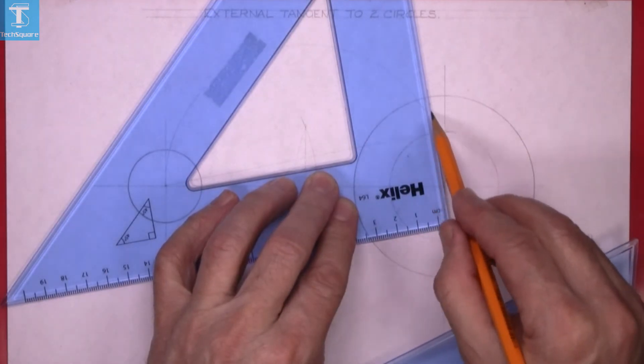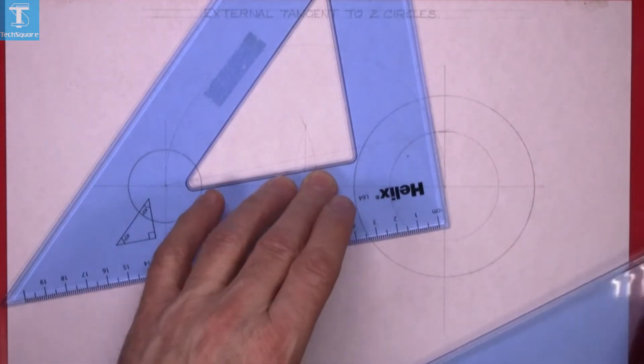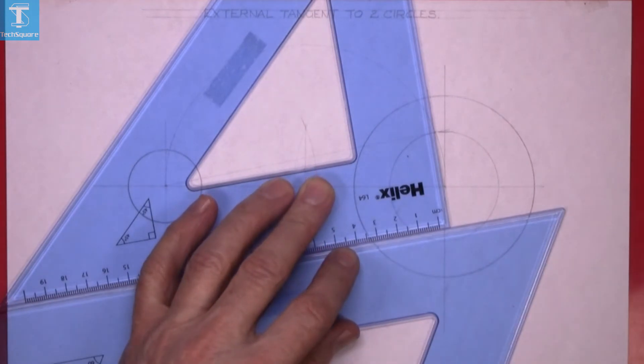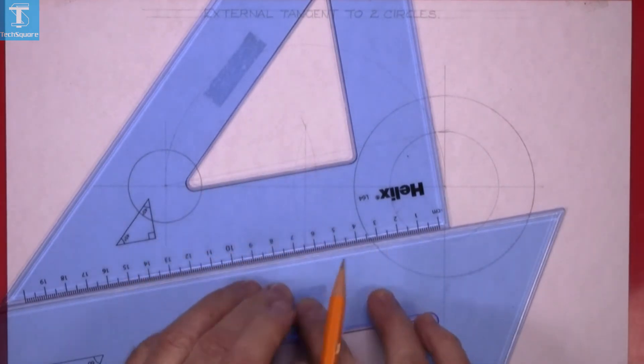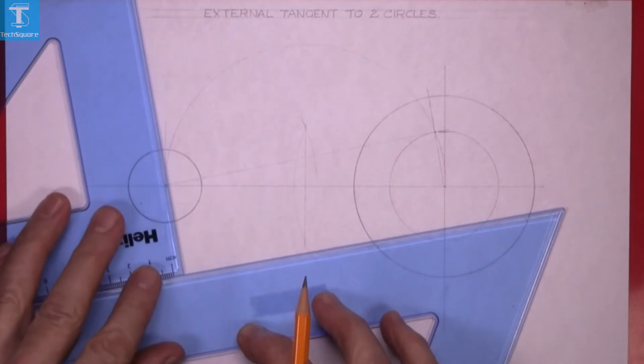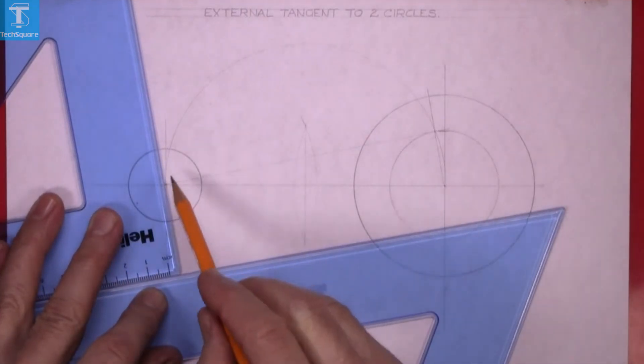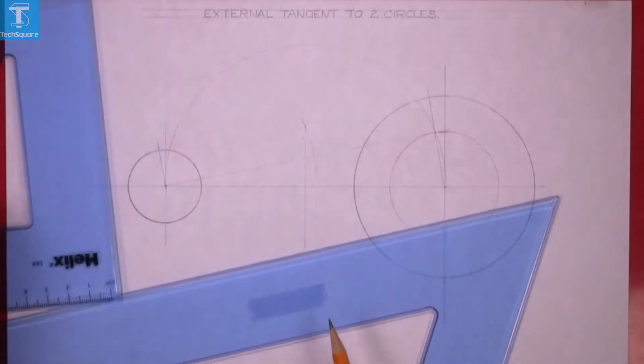Now I'm going to draw parallel from the center of the smaller circle to the top, and that gets me the point of contact up here. That's the point of contact there and there.